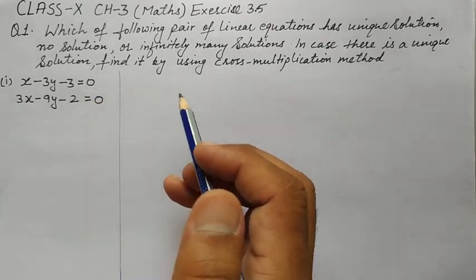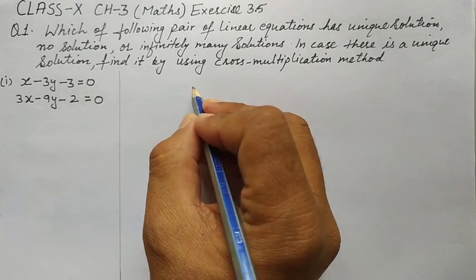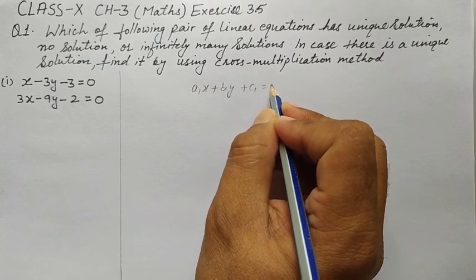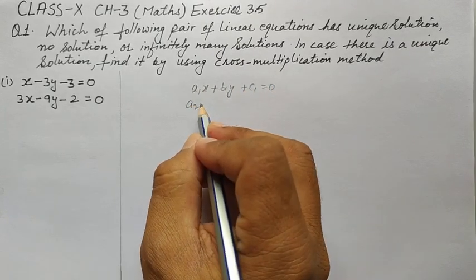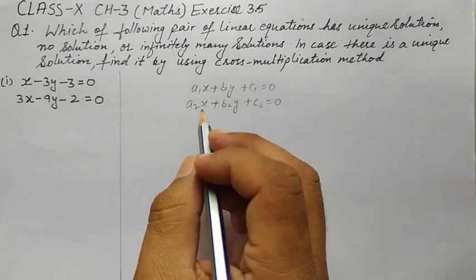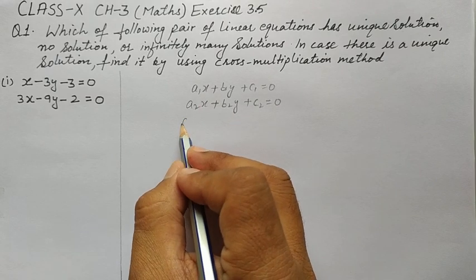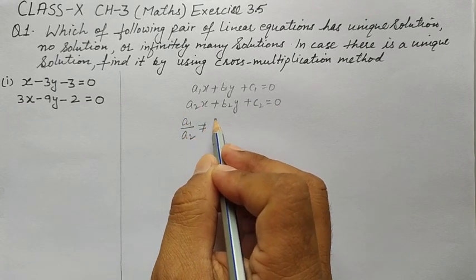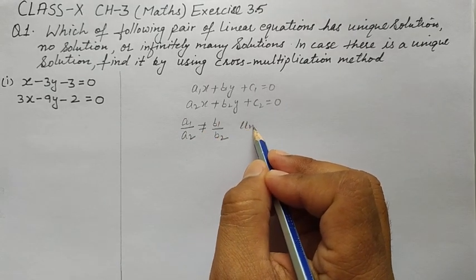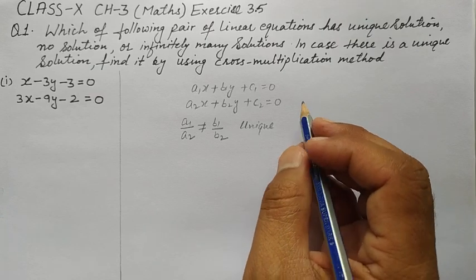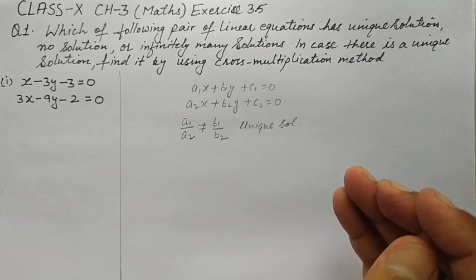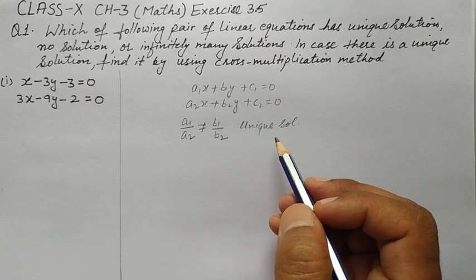The general form of a pair of linear equations in two variables is: a1x + b1y + c1 = 0 and a2x + b2y + c2 = 0. If a1/a2 does not equal b1/b2, then there is a unique solution — the pair of linear equations have intersecting lines, and the intersecting point is the solution.